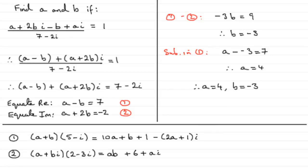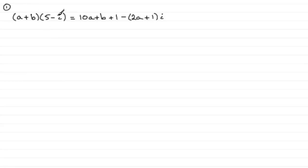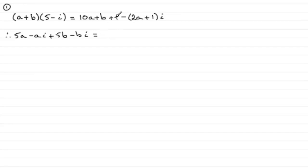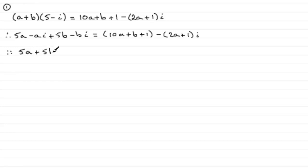Welcome back if you had a go. Let's look at the first question. The first thing I'd want to do is expand out these two brackets. Doing that we get a times 5 which is 5a, then minus ai, plus 5b, and then minus bi. Now I'm going to group this together: we've got 5a plus 5b as the real part, and minus, in brackets, a plus b, as the imaginary part.